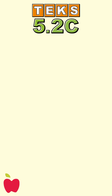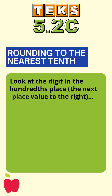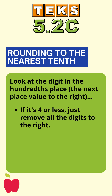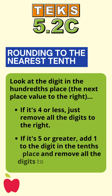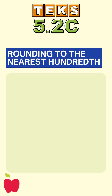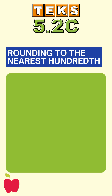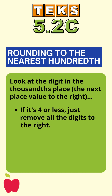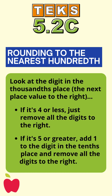Now let's talk about how to round. To round a number to the nearest tenth, look at the digit in the hundredths place — the next place value to the right. If it's four or less, just remove all the digits to the right. If it's five or greater, add one to the digit in the tenths place and remove all the digits to the right. To round a number to the nearest hundredth, follow the same steps, but this time look at the digit in the thousandths place, the next place value to the right of the hundredths.